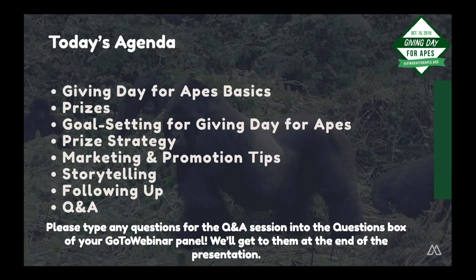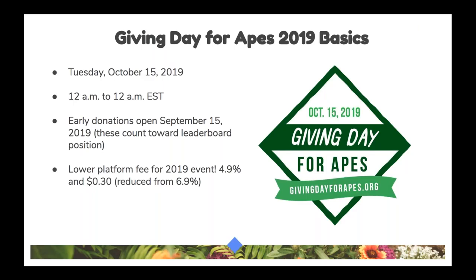Here's a quick look at today's agenda. We'll start with some basics about Giving Day for Apes as a refresher in case you missed our first two webinars. Then Jackie will talk about prizes — we have a prize announcement for you. Then we'll move into goal setting, prize strategy, marketing, promotion, storytelling, and follow-up. If you have any questions, type them into the questions box in your GoToWebinar panel; we'll leave time at the end to address them.